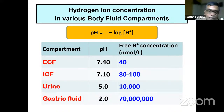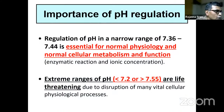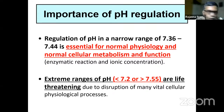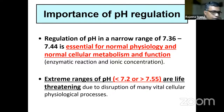In gastric fluid, pH is as low as 2, corresponding to 70 million nanomoles of hydrogen ion concentration. There is a huge difference in hydrogen ion concentration in various body compartments, and maintaining this balance is very critical in acid-base analysis. A very narrow range of pH in the extracellular fluid between 7.36 and 7.44 is essential for normal physiology and normal cellular metabolism and function.